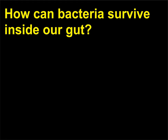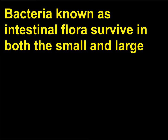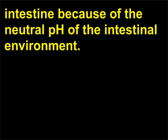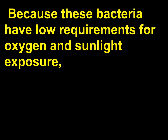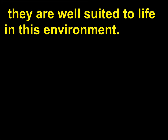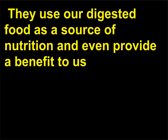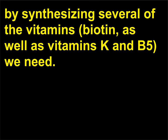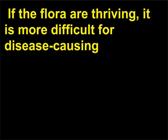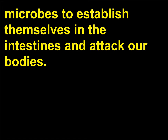How can bacteria survive inside our gut? Bacteria known as intestinal flora survive in both the small and large intestine because of the neutral pH of the intestinal environment. Because these bacteria have low requirements for oxygen and sunlight exposure, they are well suited to life in this environment. They use our digested food as a source of nutrition and even provide a benefit to us by synthesizing several vitamins, including vitamins K and B5, that we need. If the flora are thriving, it is more difficult for disease-causing microbes to establish themselves in the intestines and attack our bodies.